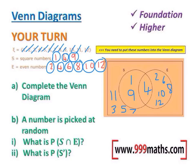OK, that's part A done. Part B: a number is picked at random. What is the probability of it being square and even? Well, there's only one number which is square and even. That was 4. So that's 1 out of 12.